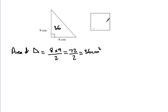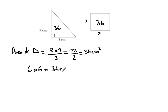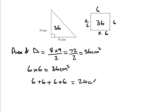So the area is 36 centimetres squared. We now know the square also has to be 36. Because it's a square, what times itself gives 36? 6 times 6 gives you 36 centimetres squared. So each side is 6. For the perimeter, we do 6 add 6 add 6 add 6, because perimeter is the distance around the shape — and that gives you 24 centimetres.